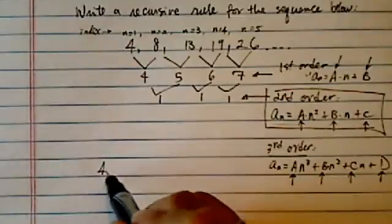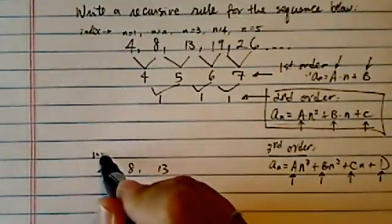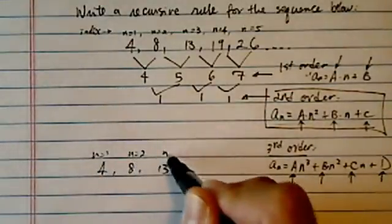So let's write it out. 4, 8, 13, it should be enough. n equal to 1, n equal to 2, n equal to 3.